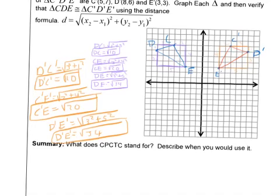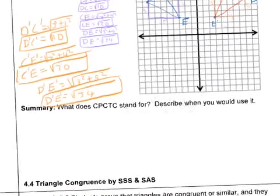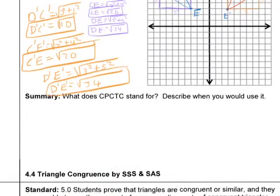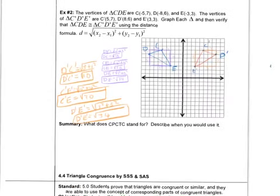For your summary, write out what CPCTC stands for and describe when you would use it. You're using it to show that all the parts of triangles are congruent — that's the main thing you want to know.